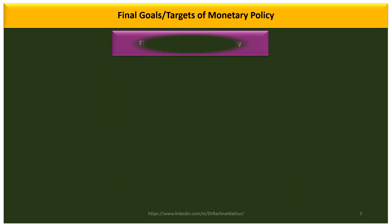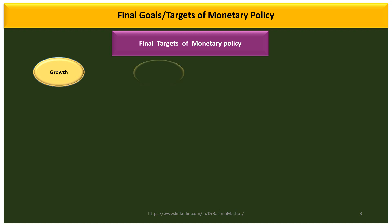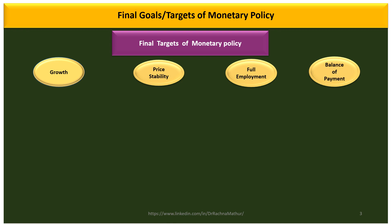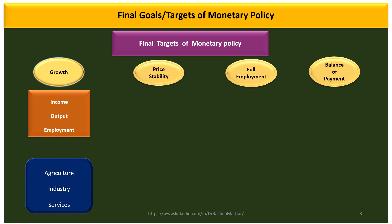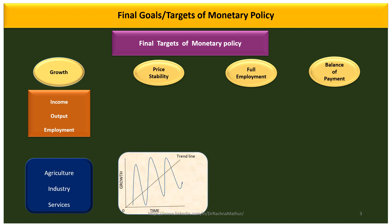There are four major final targets of monetary policy: growth, price stability, full employment, and balance of payment. Growth implies there should be a continuous increase in income, output, and employment in all three sectors of the economy — agriculture, industry, and services. There should be a smooth, steady growth path, and growth should be a continuous process in the economy.